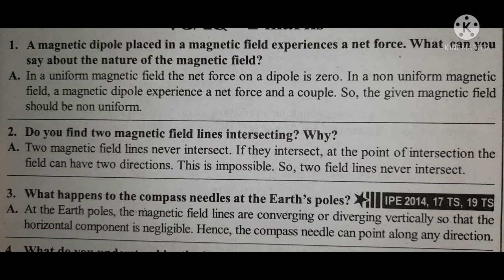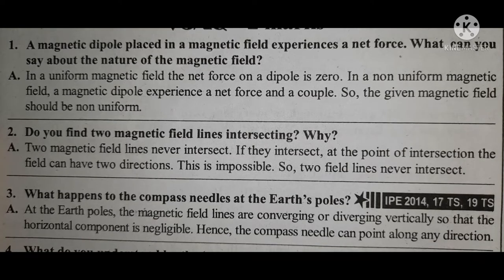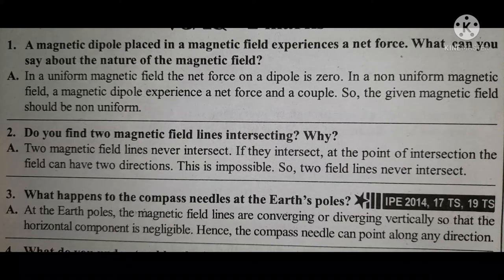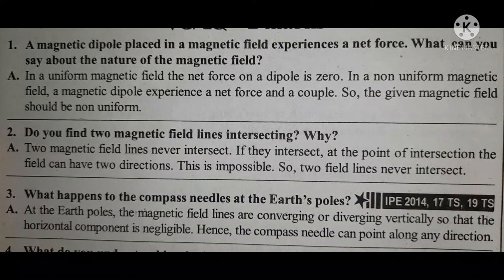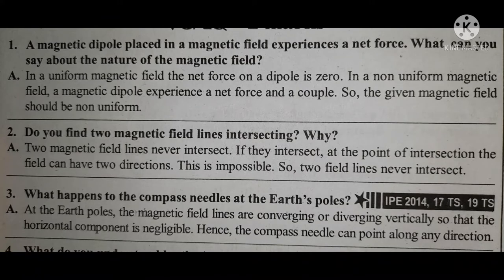Question four: What do you understand by the magnetization of a sample? Give its SI unit. The definition is: magnetization, represented by capital M, is the ratio of magnetic moment to the volume, or simply net magnetic moment per unit volume. The formula is M = M_net / V. The SI unit of magnetization is ampere per meter (A/m).